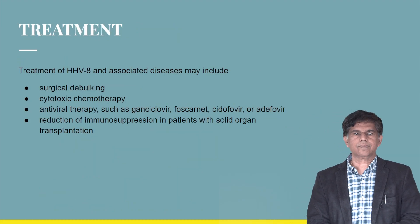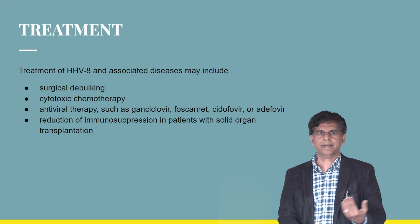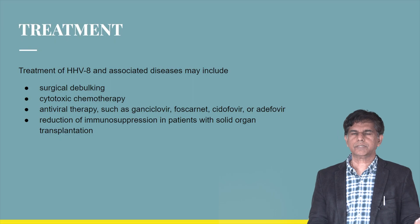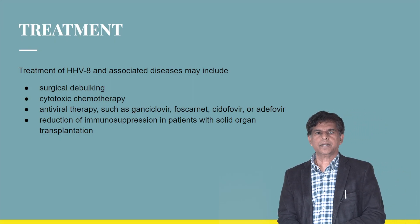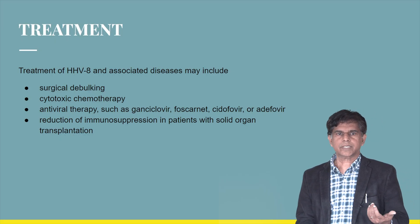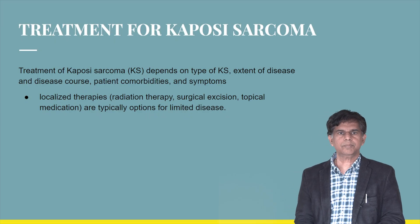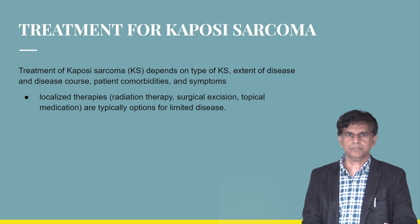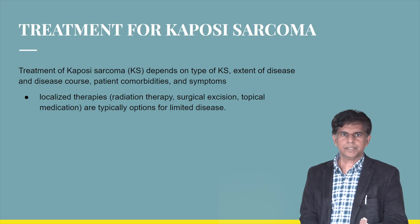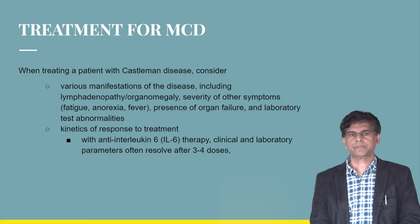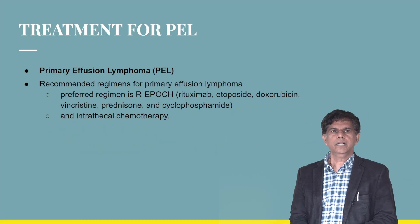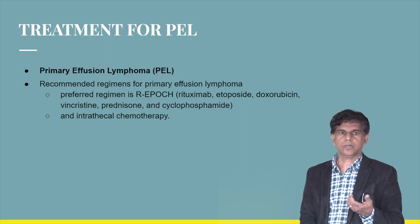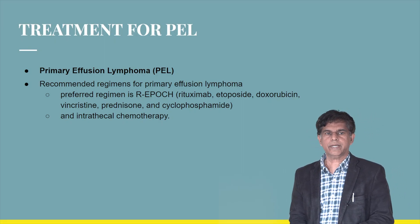Treatment of HHV-8-associated diseases includes surgical debulking, cytotoxic chemotherapy, and antiviral therapy such as ganciclovir, foscarnet, cidofovir, and adefovir. Reducing immunosuppression in solid organ transplant patients is important. For Kaposi Sarcoma, localized therapies include radiation therapy, surgical excision, and topical medications for limited disease. For MCD, anti-interleukin-6 therapy is used; clinical and lab parameters can resolve after three to four weeks. For primary effusion lymphoma, the preferred regimen is R-EPOCH: rituximab, etoposide, doxorubicin, vincristine, prednisone, and cyclophosphamide, plus intrathecal therapy.